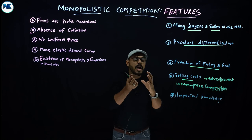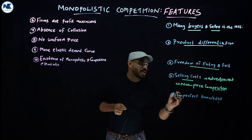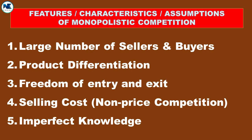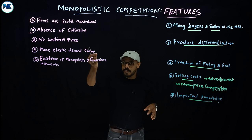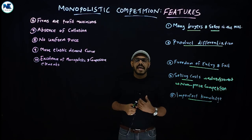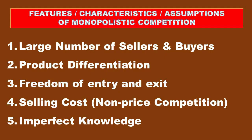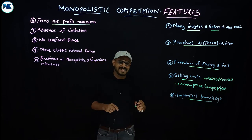The sixth point is imperfect knowledge. Unlike perfect competition where buyers and sellers have complete information about homogeneous products and prices, in monopolistic competition we see an absence of perfect knowledge — buyers do not have complete information about all products and prices in the market.